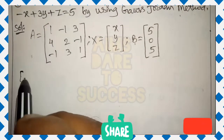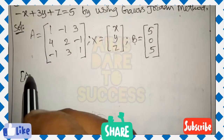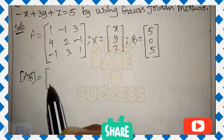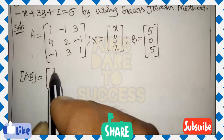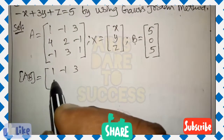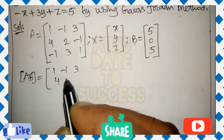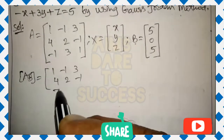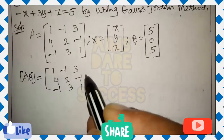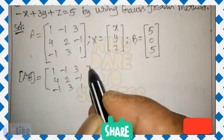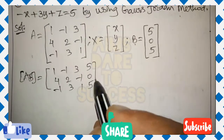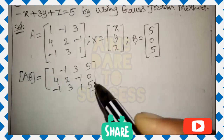Next, form the augmented matrix [A|B] by combining A and B into one matrix. Write: row 1 as 1, minus 1, 3; row 2 as 4, 2, minus 1; row 3 as minus 1, 3, 1; and the fourth column (B values) as 5, 0, 5.